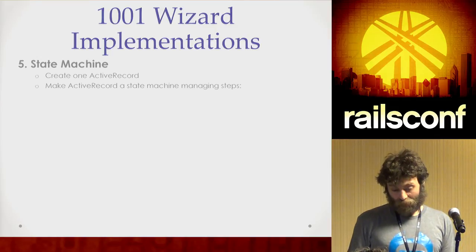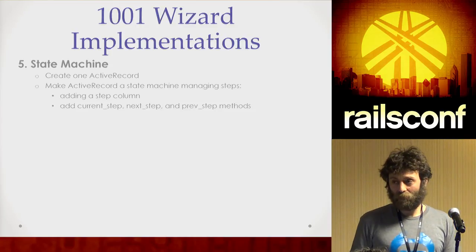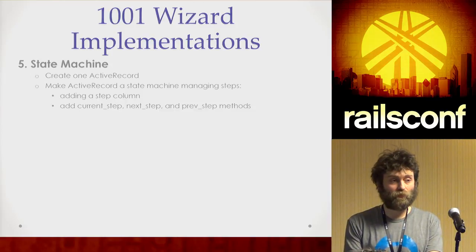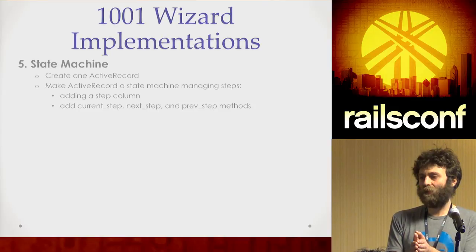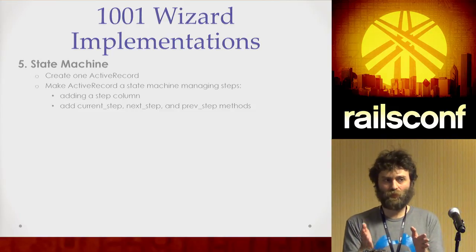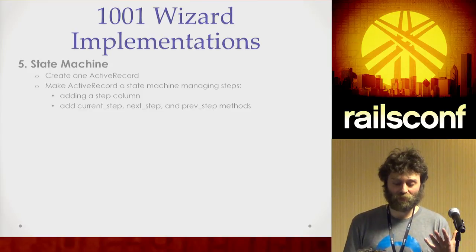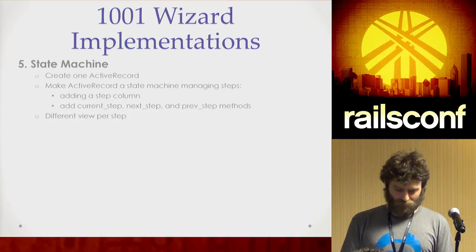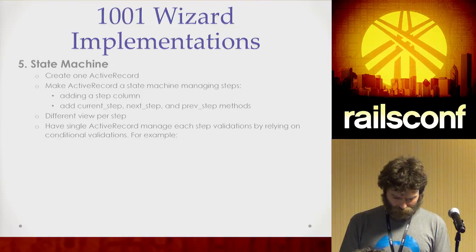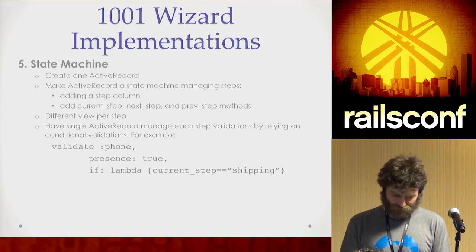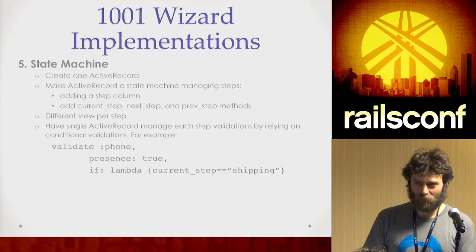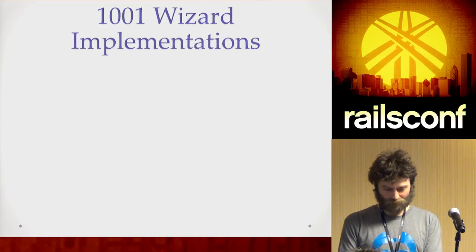You create one ActiveRecord and make it a state machine. You have to add a step column on that model to support which step you're on, so the validation knows which validations to run for each step. You'll have validations that say: if it's step one, check for first name and last name presence; if it's step two, check that the project details are present — depending on what fields each form contains on the specific step. Different view per step. For example: validate phone presence true, if current step is shipping.